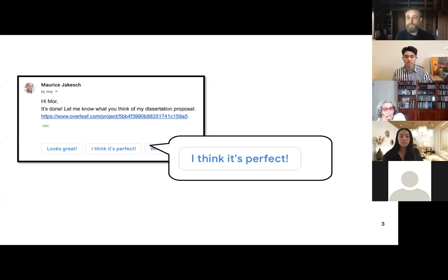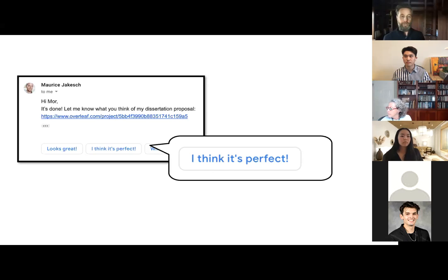Here's another example, smart replies. This one is not just trying to adjust and predict our words, but actually creating whole messages out of cloth. This is one of my favorite examples. This is from Maurice, who's one of the authors of a couple of the studies we'll talk about today, talking to his advisor Mor and I'm on there at Cornell tech. He says, hi Mor, it's done. Let me know what you think of my dissertation proposal. And the system, the smart reply system offered: I think it's perfect. Could you ever imagine professors saying I think your dissertation rules is perfect? No.